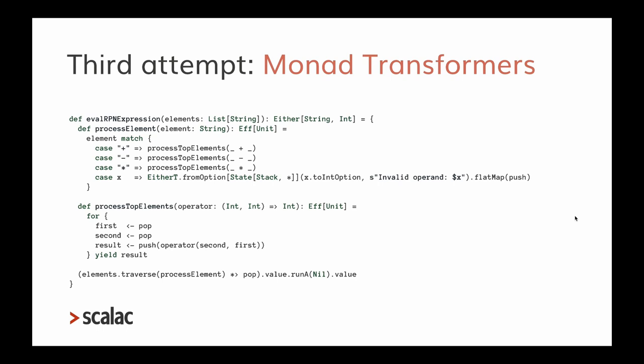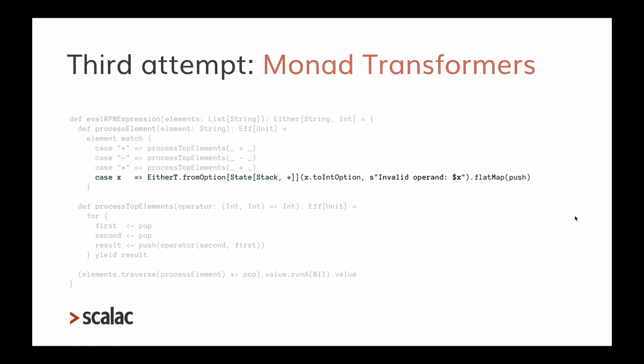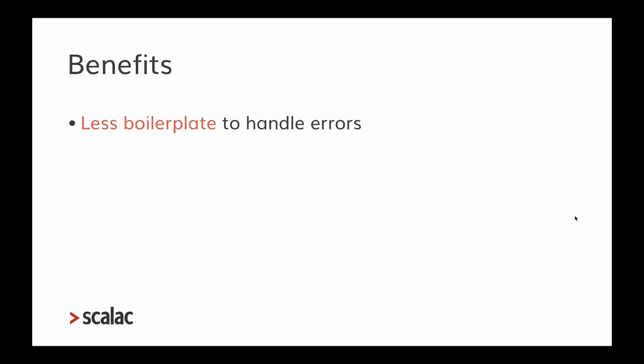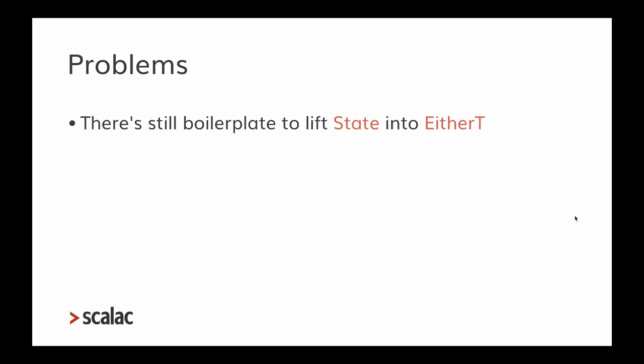For example, when checking if a value being pushed is really a number, I have to call fromOption with an awful type annotation. The benefits are less boilerplate for error handling and the solution fits on one slide, but there is still new boilerplate needed to lift State into EitherT, and even worse type inference. Using monad transformers also affects performance.